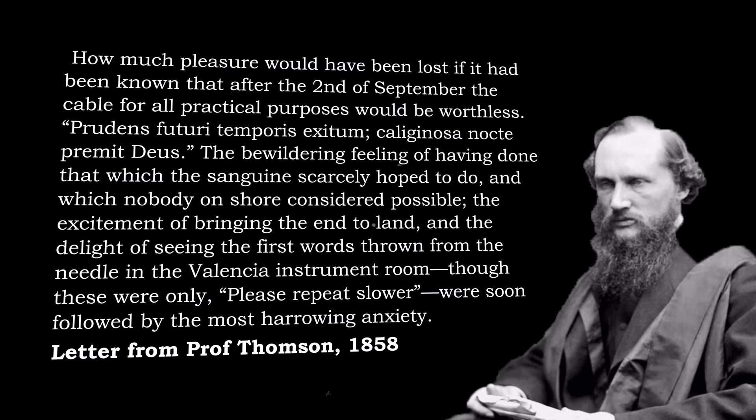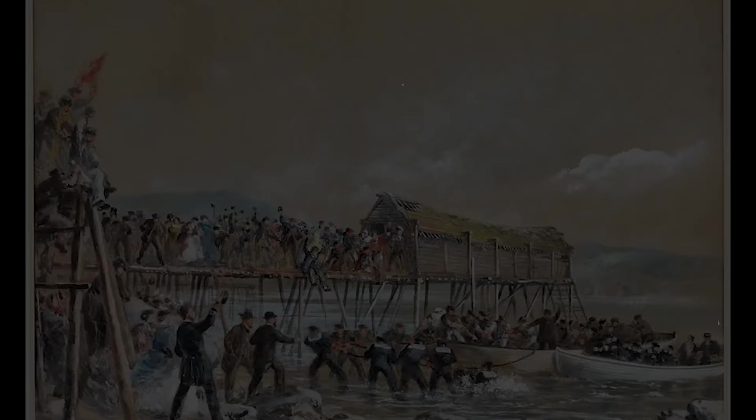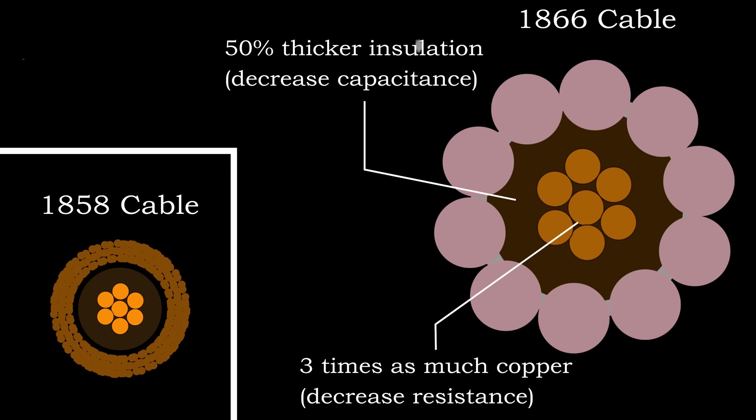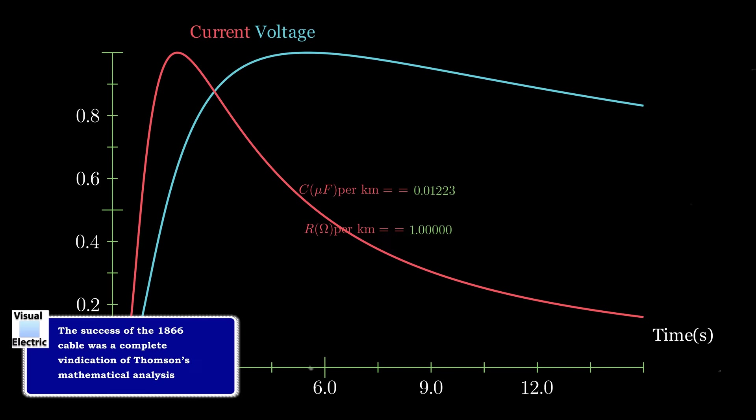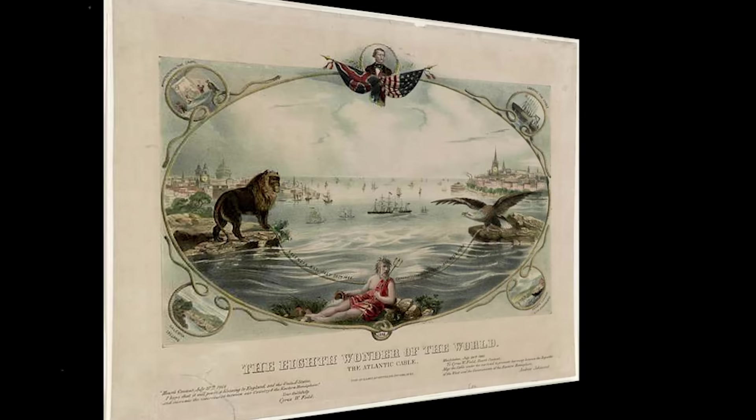The next transatlantic cable would be laid in 1866. It incorporated 50 per cent thicker insulation and three times the weight of copper per nautical mile. According to Thomson's theory, this would result in improved transmission speeds. And, indeed, this proved to be the case. Now the cable could transmit eight words per minute. The age of transatlantic communication had truly been reached.